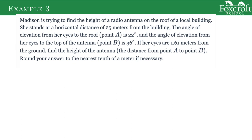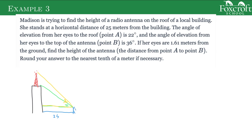Madison is trying to find the height of a radio tower on the roof of a building. We have this building with the antenna on the top. She stands at a horizontal distance 25 meters from the building. The angle of elevation from her eyes to the roof is 22 degrees, and from her eyes to the top of the antenna is 36 degrees. We know her eyes are 1.61 meters from the ground. What is the height of the antenna? The extra information about her eyes being 1.61 meters is actually not necessary for this problem.